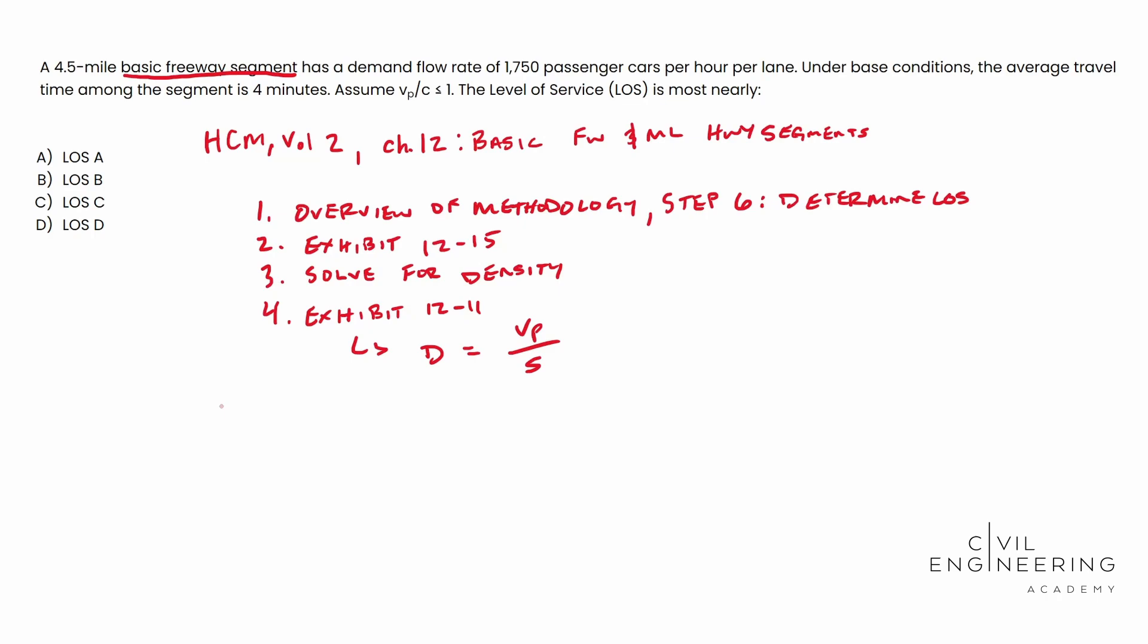We know V sub P, right? V sub P was given to us in the problem statement. So V sub P is equal to 1750. And this is passenger cars per hour per lane.